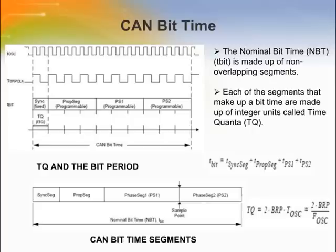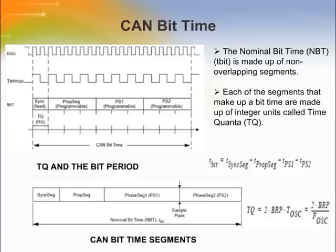The CAN protocol uses non-return to zero coding which does not encode a clock within the data stream. Therefore, the receive clock must be recovered by the receiving nodes and synchronized to the transmitter's clock. Each of the segments that make up a bit time are made up of integer units called time quanta or TQ. The length of each time quantum is based on the oscillator period; the base TQ equals twice the oscillator period. The synchronization segment is the first segment in the nominal bit time and is fixed at one TQ. All devices on the CAN bus must use the same bit rate, and for different clock frequencies of individual devices, the bit rate must be adjusted by appropriately setting the baud rate prescaler and the number of time quanta in each segment.